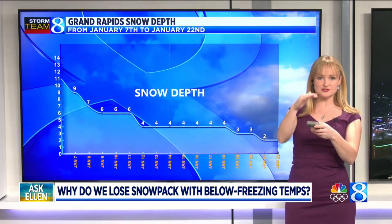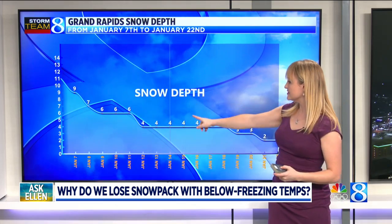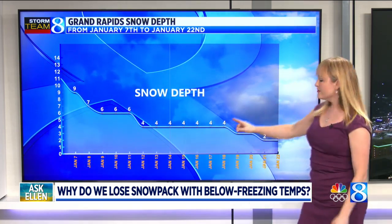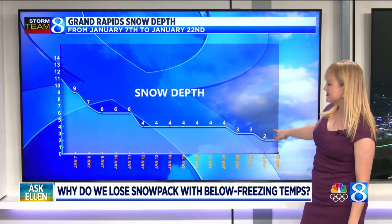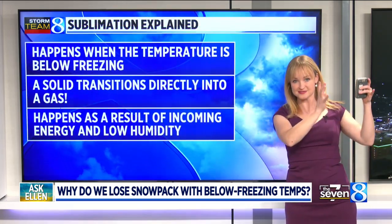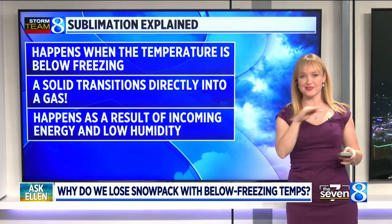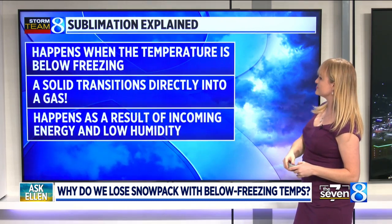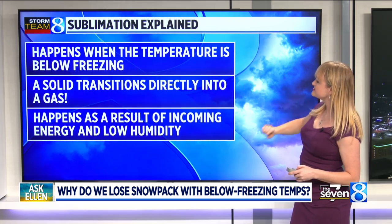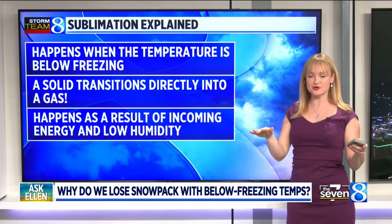So the first drops are likely just the snow settling down and compacting a bit. And yes, we did have some days where there were big snowpack drops when the temperatures were warm and the snow melted. But this drop in the snowpack happened due to the process of sublimation — it's when a solid substance like ice or snow turns directly into a gas without melting. This has to happen when temperatures are below freezing. It's the transition from a solid right to a gas, and it happens as a result of incoming energy onto the solid and low humidity.